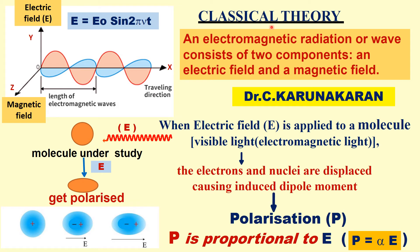Before we study the classical theory, let us study about electromagnetic radiation or electromagnetic waves. What is electromagnetic radiation? For example, IR radiation, microwave radiation, gamma rays, UV rays, visible rays — these are all electromagnetic radiation. Any electromagnetic radiation consists of two components: an electric field vector along the y-axis and a magnetic field along the z-axis. The radiation is traveling in the x direction.